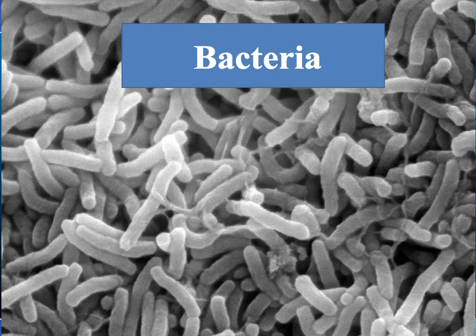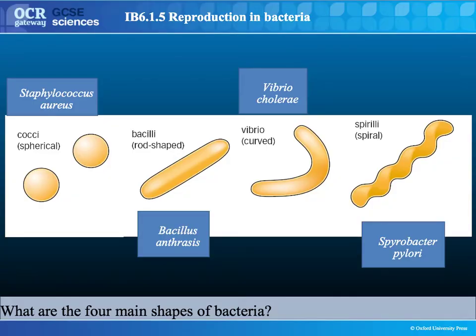We can classify bacteria based on their shape. There are four main shapes for bacterial cells. The first are cocci, which are spherical cells. An example is Staphylococcus aureus, which can cause infections such as impetigo and is also what causes MRSA, a hospital-acquired infection.